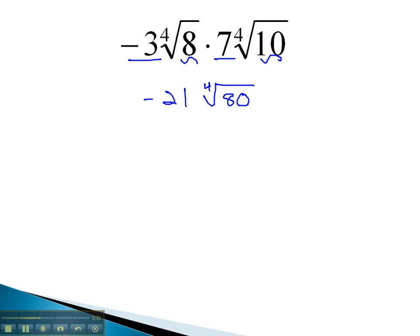Of course, before we call this our final answer, we must find the prime factorization of 80 to see if we can pull anything out of this root. 80 is divisible by 2, 40 times 2, 20 times 2, 10 times 2, 5 times, and 5, 1 time. We now have negative 21 times the 4th root of the prime factorization, or 2 to the 4th, times 5.